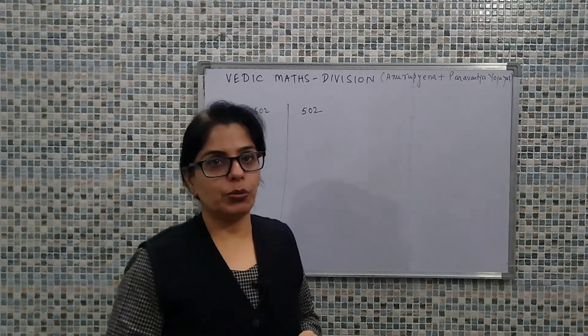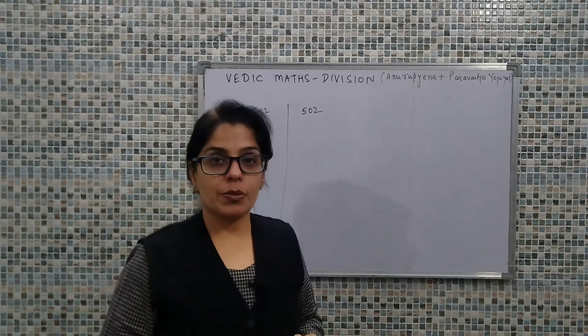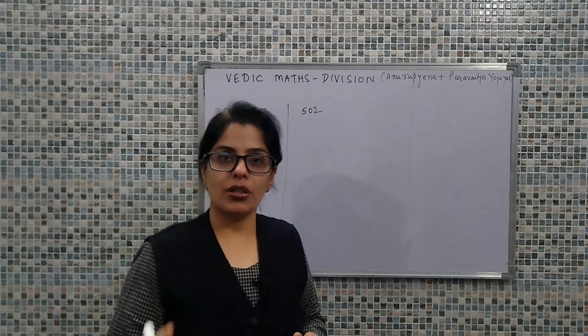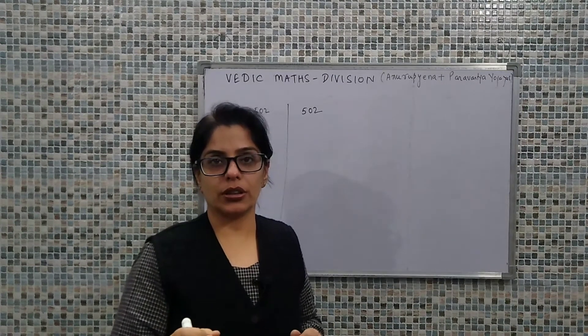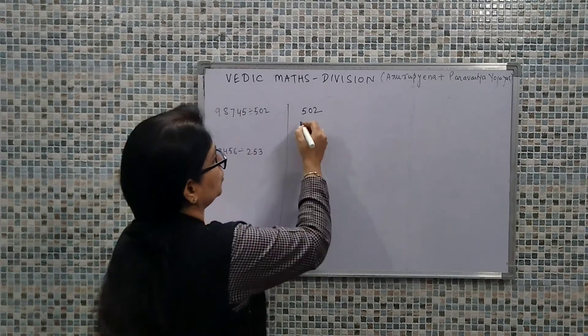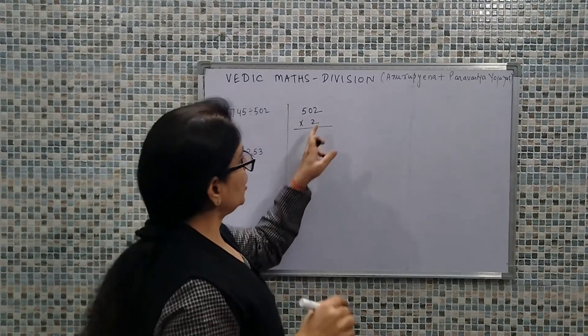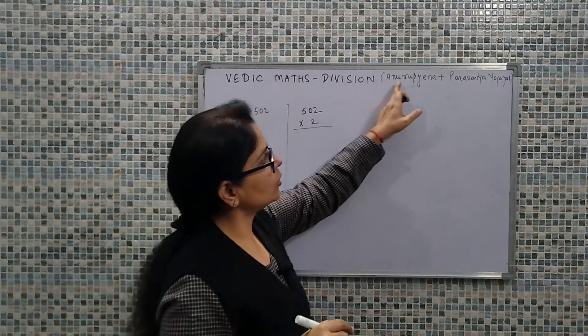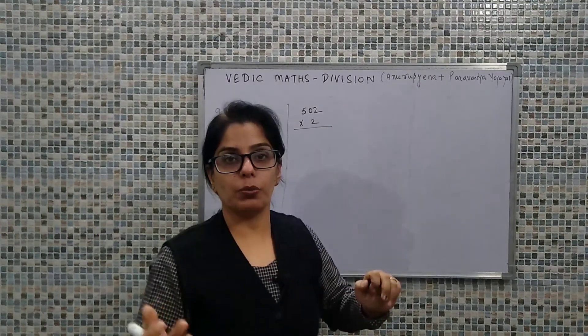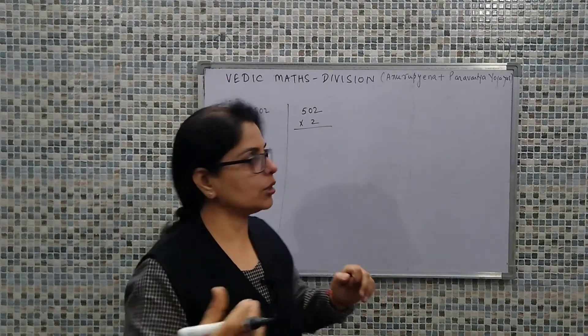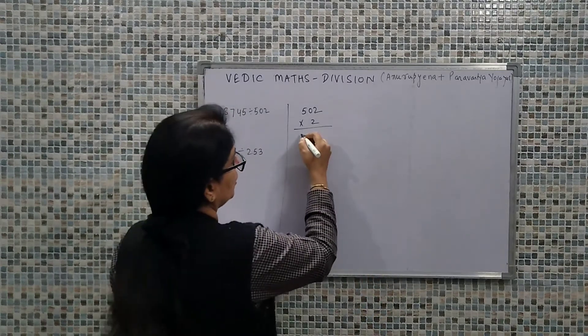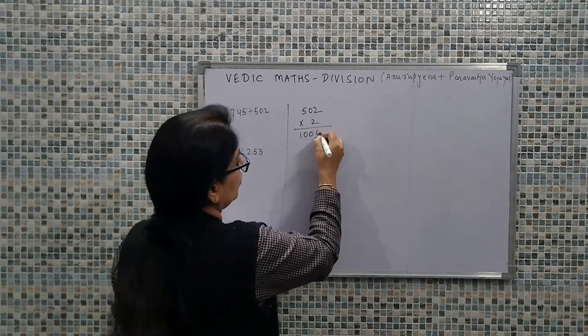Now here we would explore whether there is any possibility to bring this number to 1000. Obviously, I can define a multiplying factor of 2. When I define this multiplying factor, this is where we are using Anurupyena - proportionality. So our number becomes 1004.